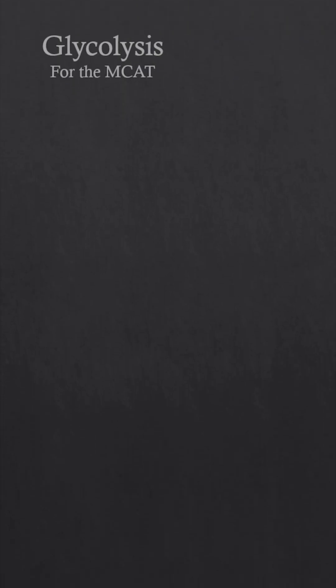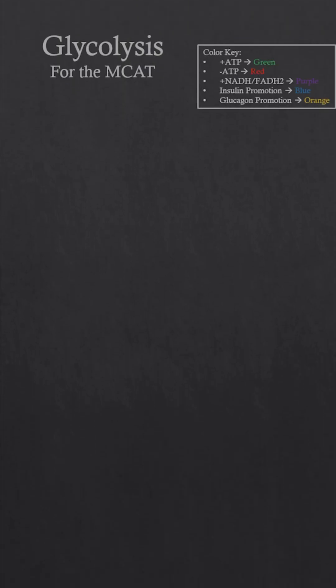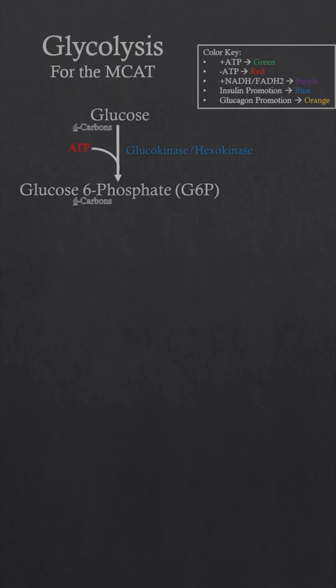Starting with the six-carbon sugar glucose, we use one ATP to produce the molecule G6P. This is done by glucokinase in the liver and pancreas, or hexokinase everywhere else — they are the same enzyme, just located in different places.